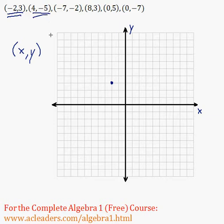How about 4 comma negative 5? So again, starting here at the center, our value for x is 4. So we're going to go 4 units to the right now, since we have positive 4. So 1, 2, 3, 4.